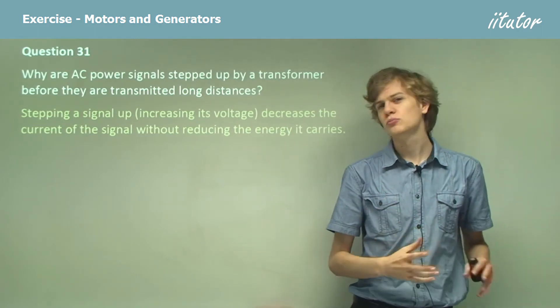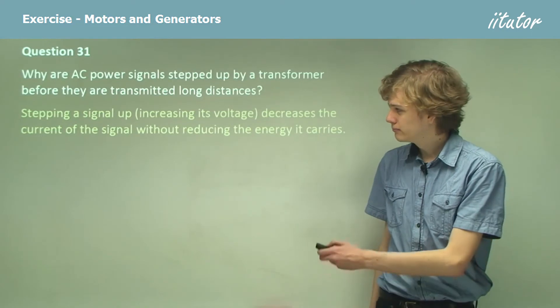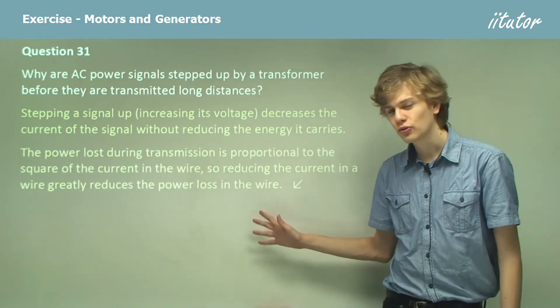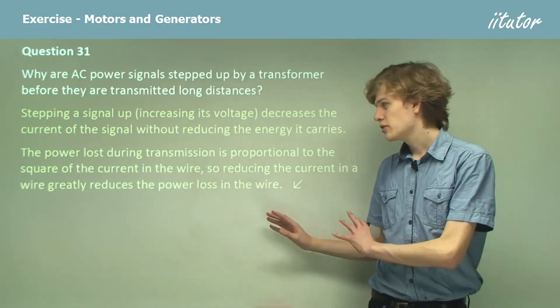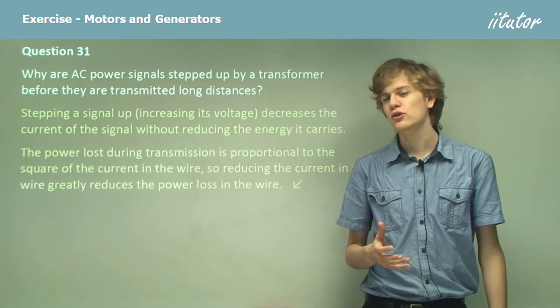So what's the advantage of having a small current? Well, the power lost during transmission is proportional to the square of the current in the wire. So reducing the current will reduce the power loss in the wire.